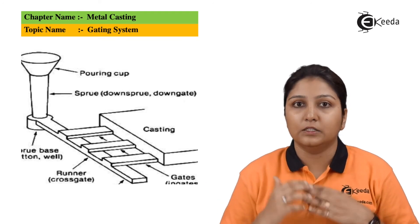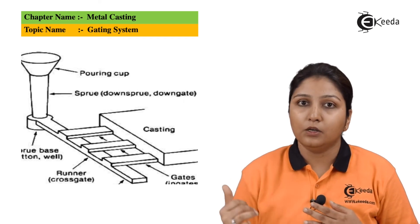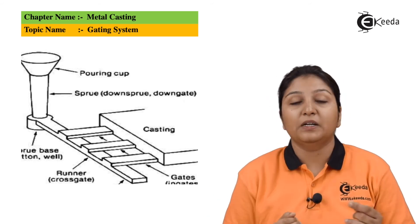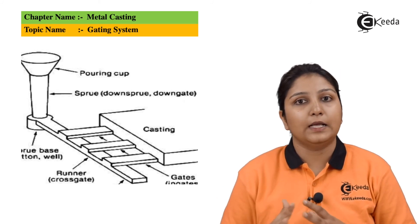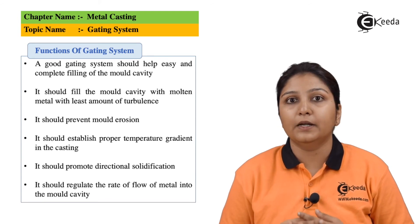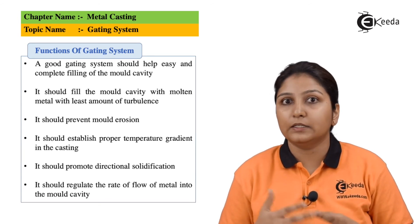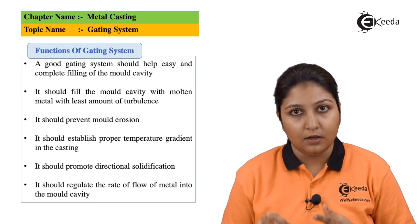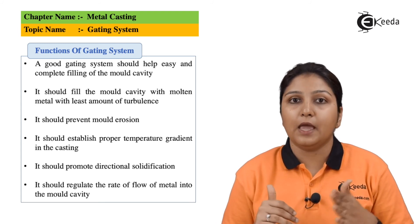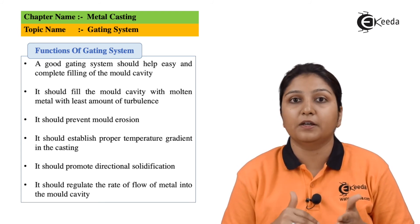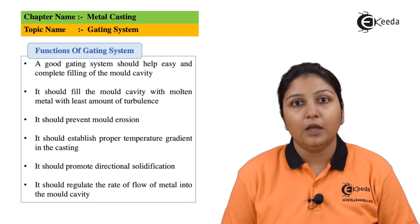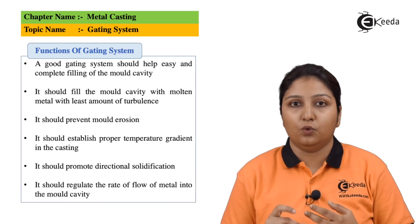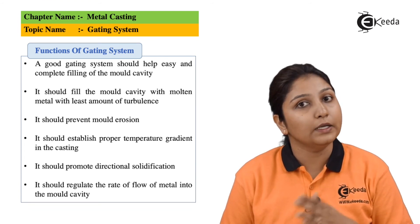The material flows continuously through the gates, while solidification also occurs simultaneously in some elements. Now, the main functions of a good gating system: it should not have any kind of erosion as liquid passes through; the amount of turbulence should be very low; and filling should be completed easily without any hindrances. These three points — easy filling, less turbulence, and less erosion — are the key requirements of a good gating system.